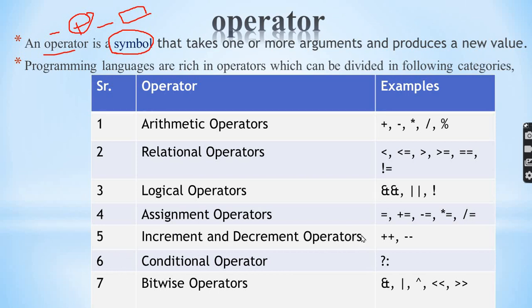The increment operator, plus plus, will increment a value by one. When you use minus minus, the decrement operator, the value decreases by one. There are also conditional operators and unary operators.